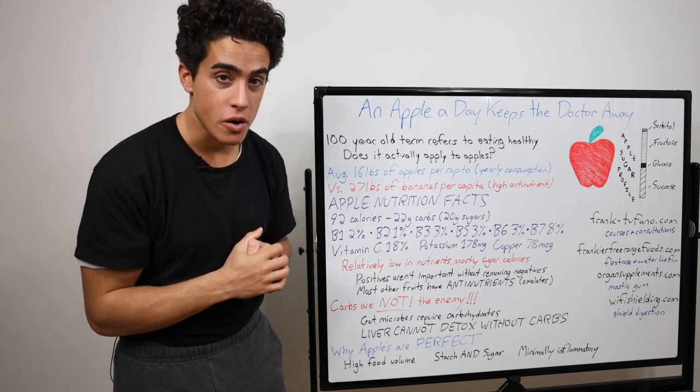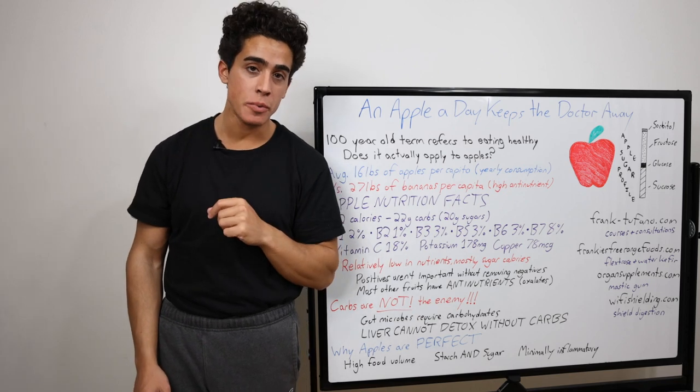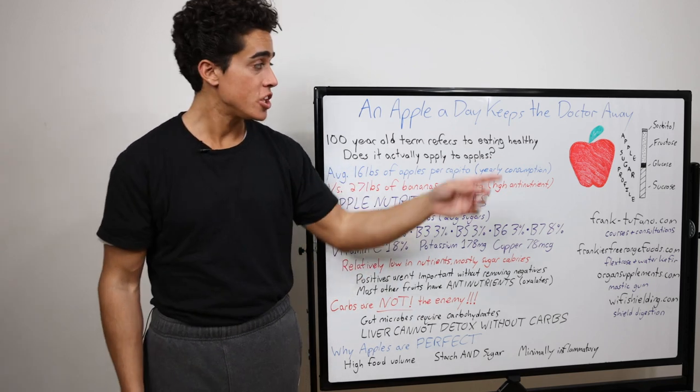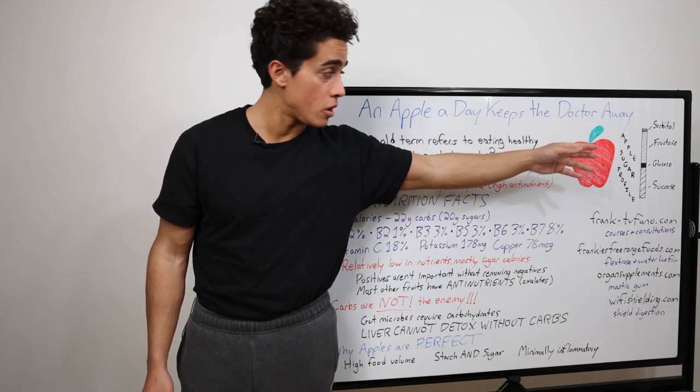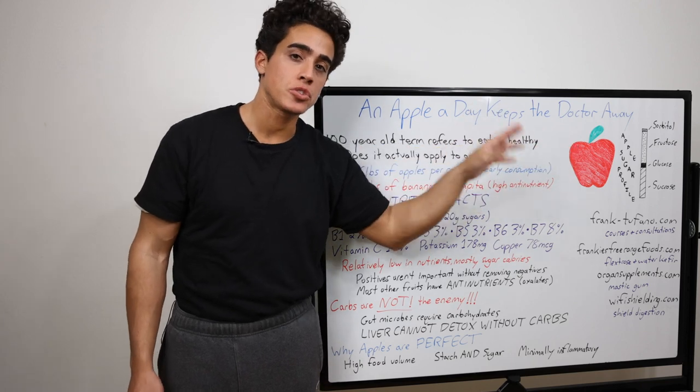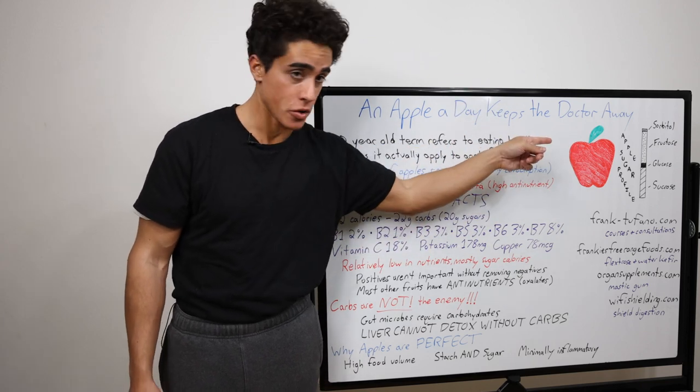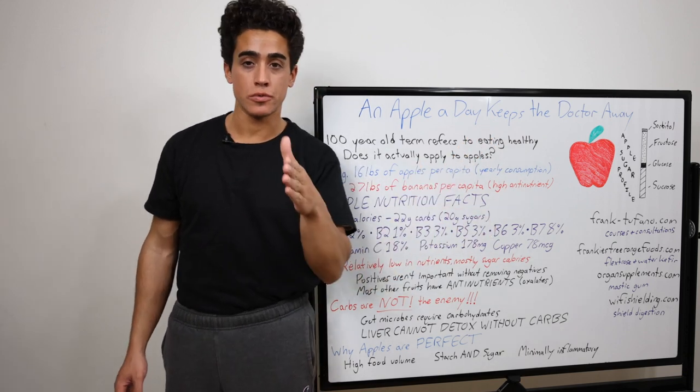Not all apples are the same. There are different sugar profiles depending on the type of apple as well as the stage of ripeness. You have a fairly insignificant amount of sorbitol, a sugar alcohol, a small amount of glucose there in the middle, but the majority of the sugars in apples are fructose and sucrose, sucrose being glucose bound to a fructose molecule.